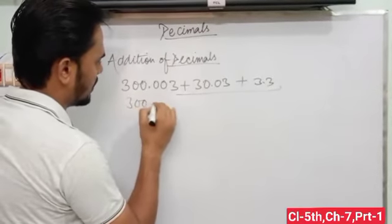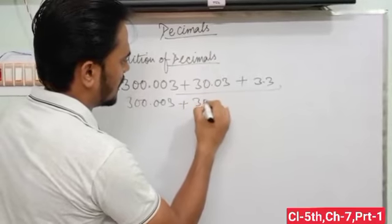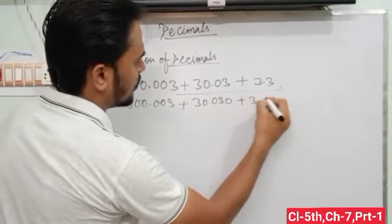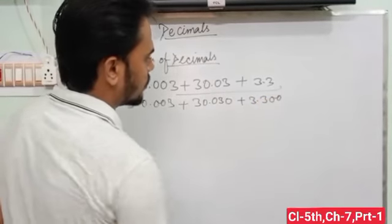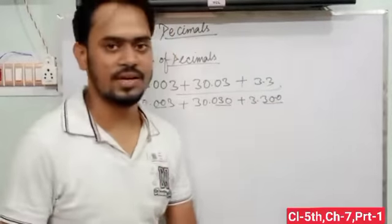So 300.003 - there are three digits. So 30.030 and 3.300. Now all have 3 digits after decimal. This is in like decimal.